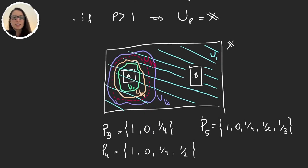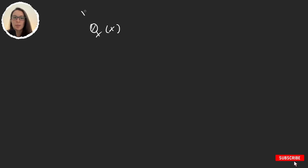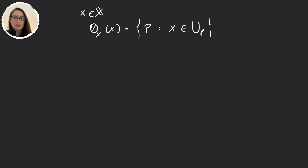We finished the last video finding this chained family of subsets of X that were sort of dense. Now we will finally define the function that will give us Urysohn's Lemma and prove that it's continuous. For this, we will define the set Q(x) for any element x in the space as the set of all the indexes p for which x is an element of U_p, where U_p were the sets defined in the previous video.